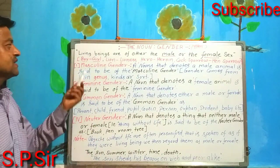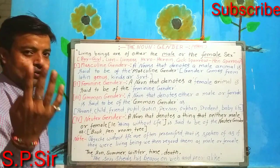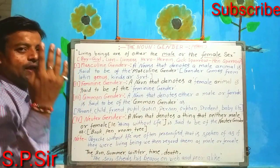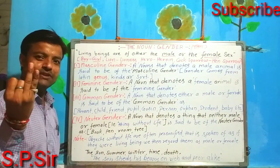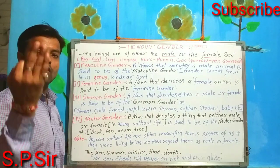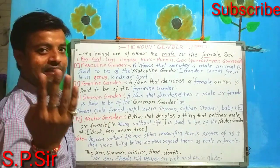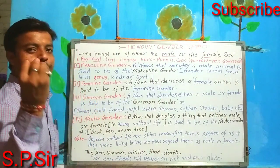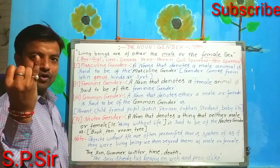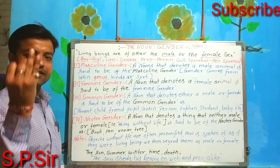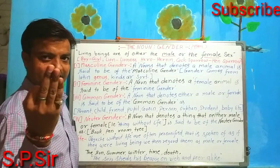How many types of gender are there? There are four: masculine gender, feminine gender, common gender, and neutral gender. In Hindi, we call them purust vachak sangya, stri vachak, and so on.